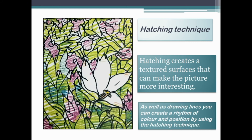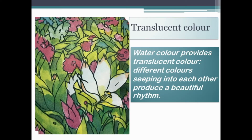The second one is drawn using colored pencil. As we add drawing lines, you can create a rhythm of color and position by using a hei-ching technique. The picture shows hei-ching from left to right and from top to bottom. Using colored pencils, hei-ching creates a textured surface that can make the picture more interesting.